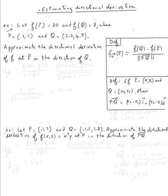Alright, so the estimation — the definition — is right here. The directional derivative in the direction of pq, and of course it's not a unit vector but we're just approximating, is equal to f of q minus f of p over the norm of pq, or the distance between p and q. Distance between p and q means the norm of the vector pq.